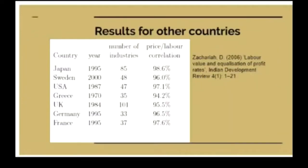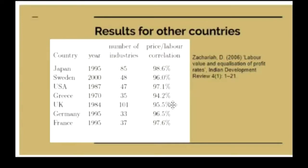If we go on to some other countries, we can look at the degree of correlation between the labour content and the value of industrial output across sectors — and it's extraordinary how strong the correlation is. 98.6% for Japan, 97% for the USA. The UK has somewhat lower results at 95.5%, so the UK data I gave you was unusually poor. Most countries the correlation is much stronger — it's as close as damn it to a straight line.